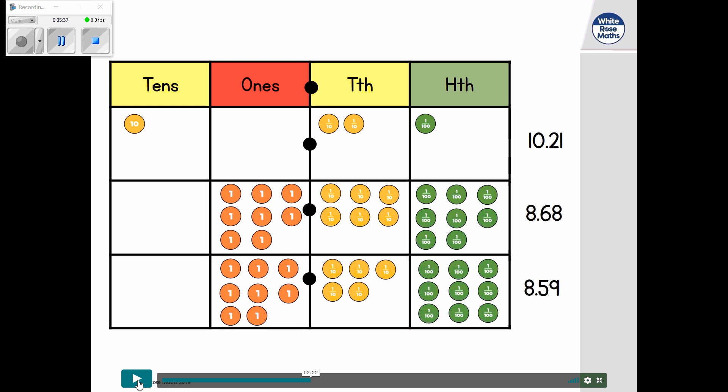You can see here, it's really important to compare each unit at the same time, each value at the same time. So tens is larger than ones. Ones with 8.68 and 8.59, they are the same. But the tenths are where we start to see a variance.